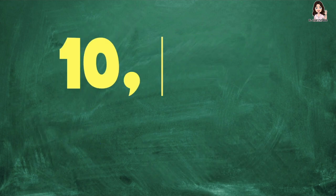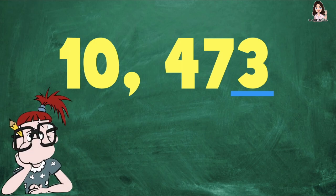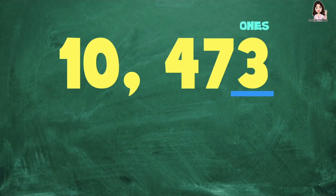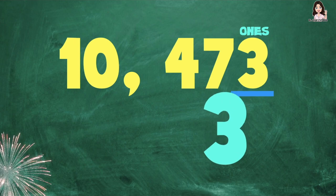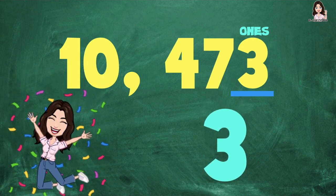How about if we have 10,473? What is the value of digit 3? Since digit 3 is at the ones place, the value is 3. We will not put any zeros because there's no digit to the right of 3.